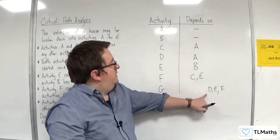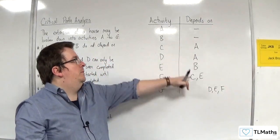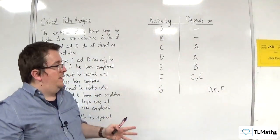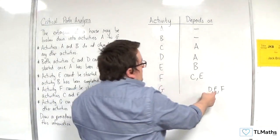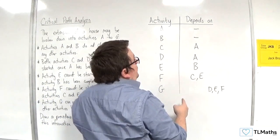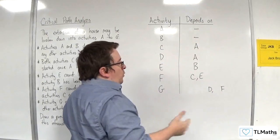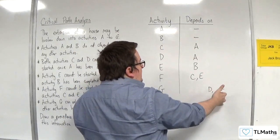What about D? Well, D hasn't, no activity has depended on D so far. So, I'm definitely going to need D to be there. What about E? Well, F relied on E as well. So, I don't need E. So, actually, all I need is D and F.